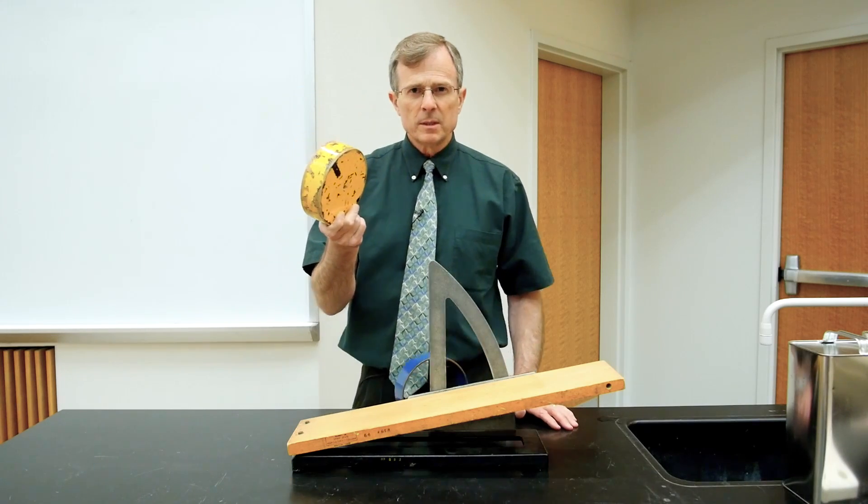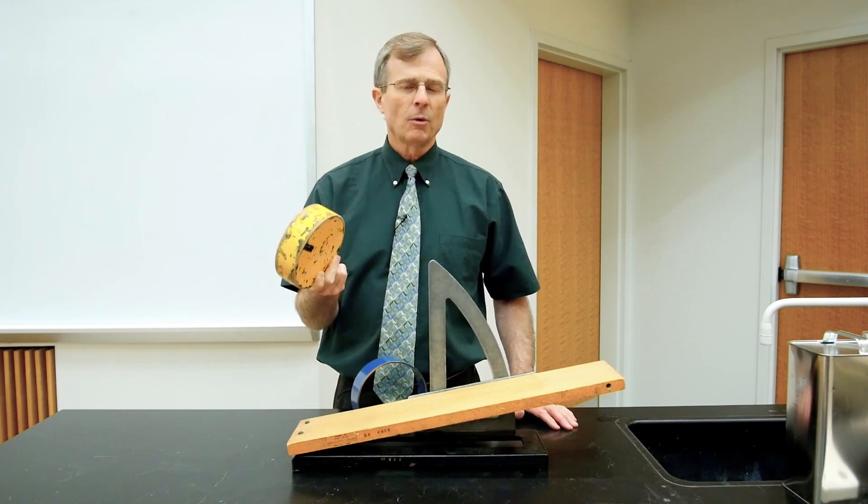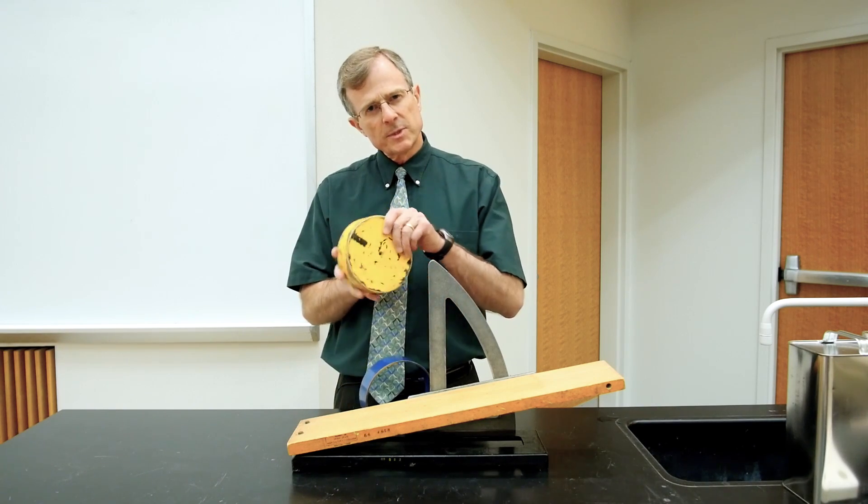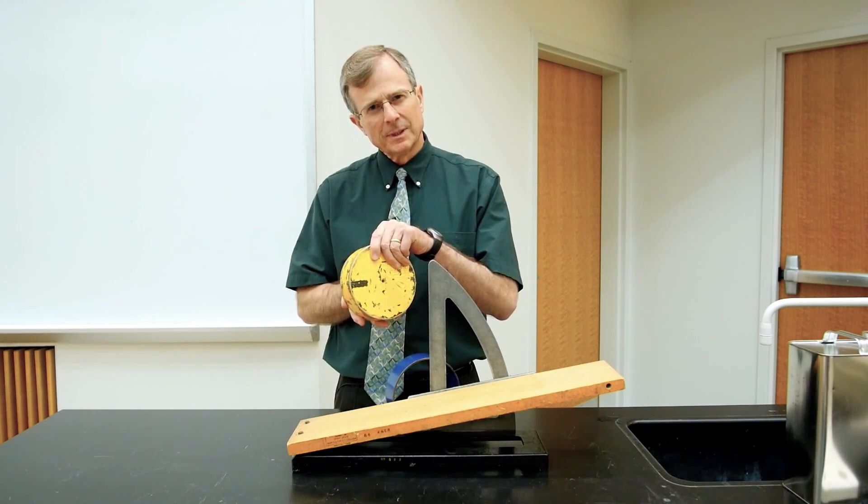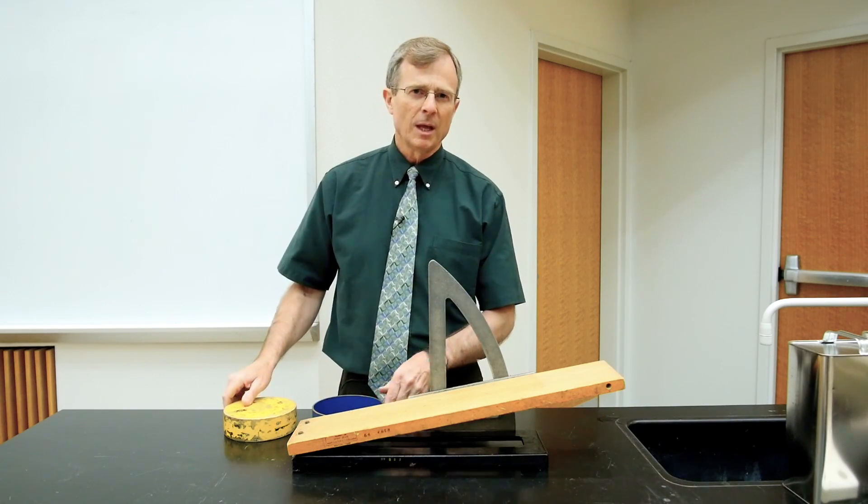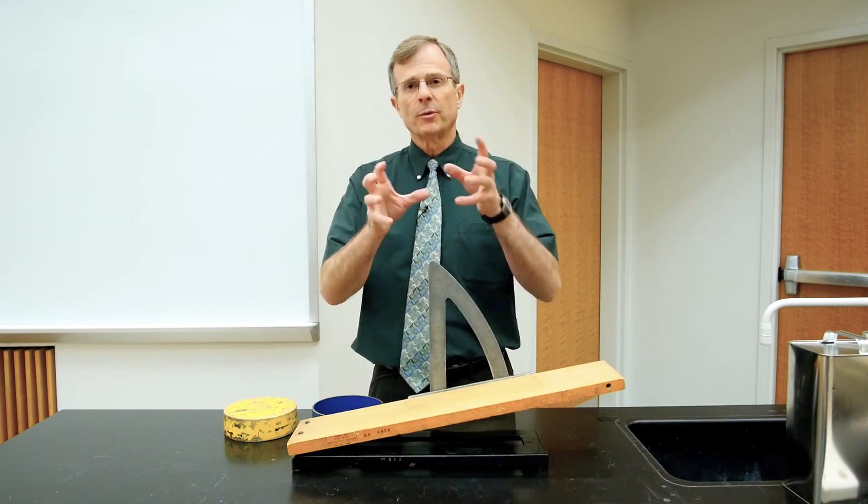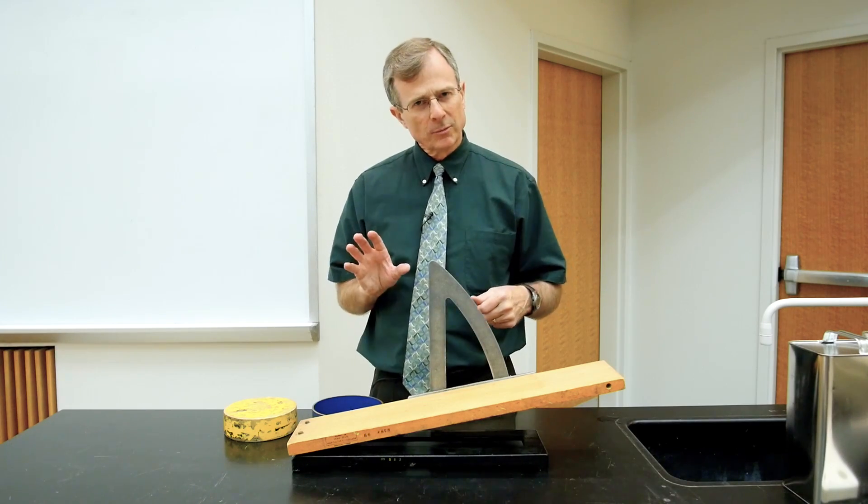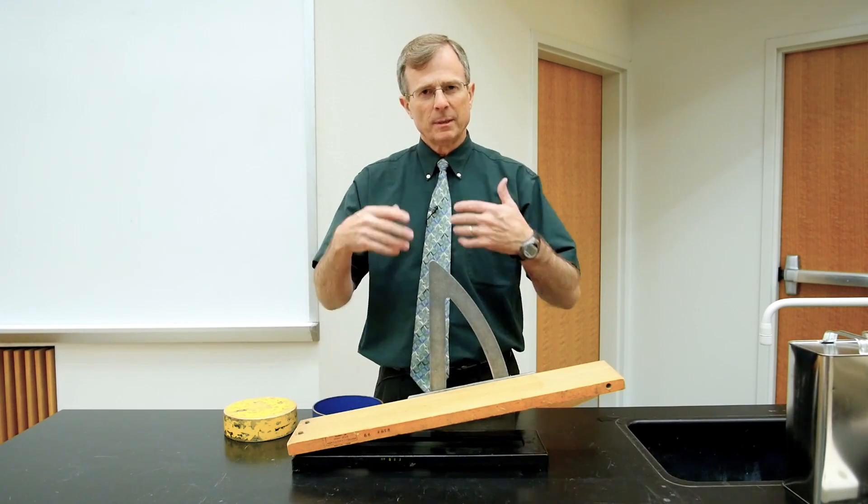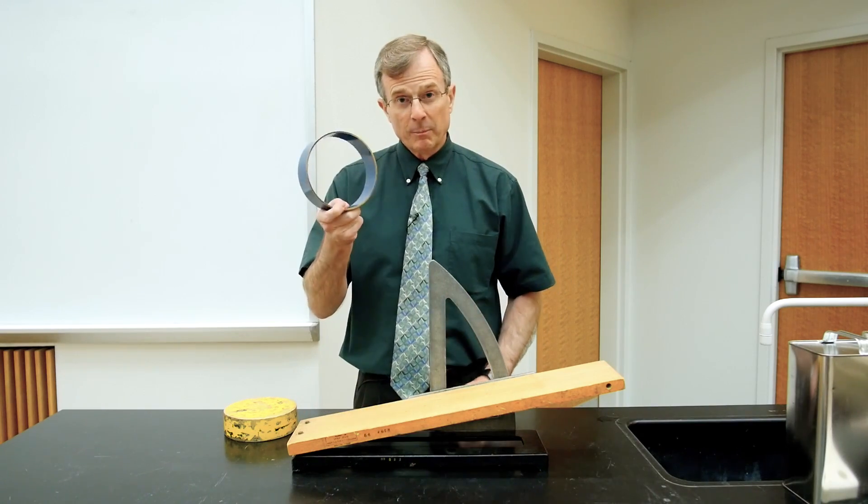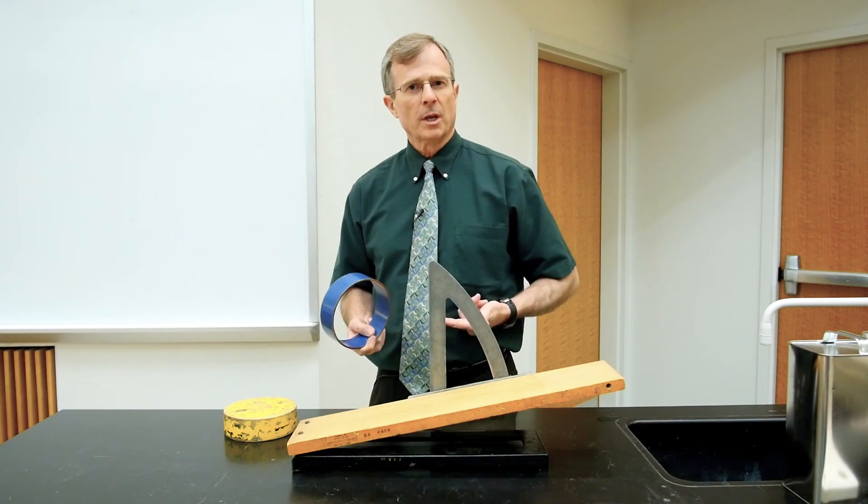As you can see, the winner is the one with the smaller moment of inertia. Why is that? The reason is that it has less resistance to turning motion because it has a smaller moment of inertia. Moment of inertia for rotational motion acts a lot like mass for translational motion. The bigger the mass, the slower it is to start up. The bigger the moment of inertia, the slower it is to start turning.